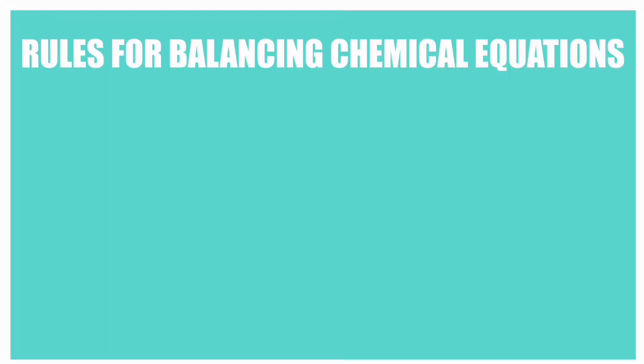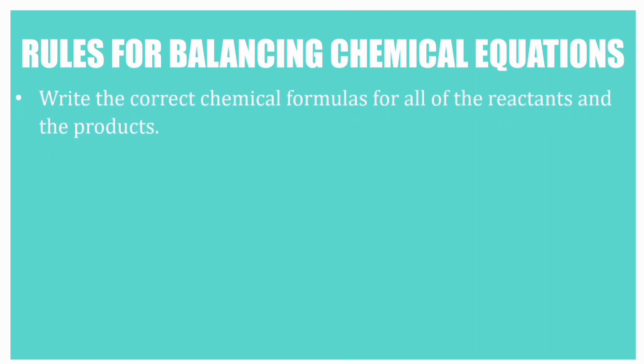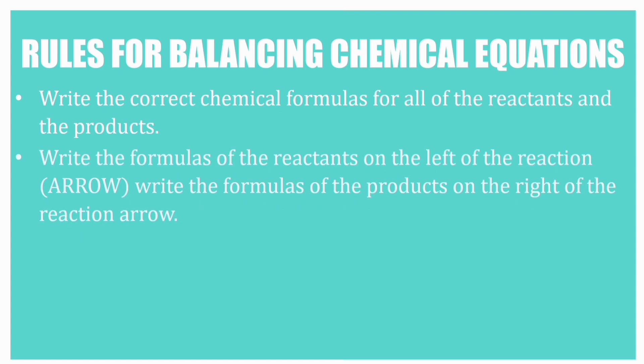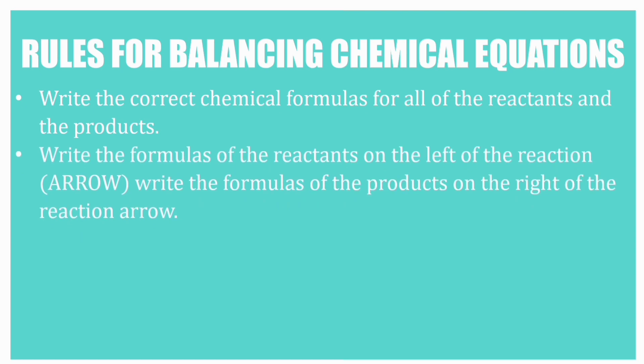There are rules for balancing a chemical equation. First, write the correct chemical formulas for all of the reactants and the products. Second, write the formulas of the reactants on the left of the reaction arrow.